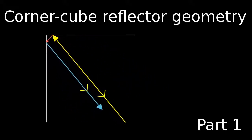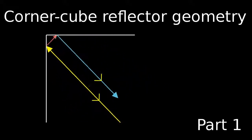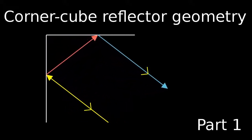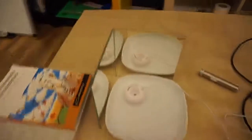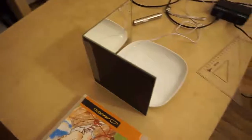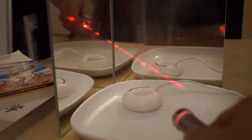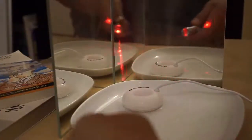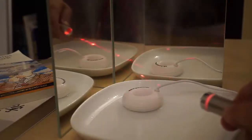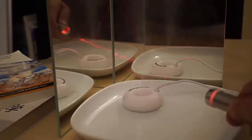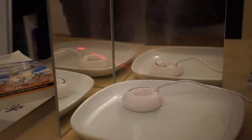Today, I would like to talk about the corner cube mirror. Here are two mirrors. They are perpendicular to each other. I shoot a red laser light into this mirror configuration. You see that the light travels back to the original position, no matter how I tilt the pointer. This is the corner cube reflection.